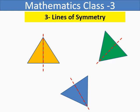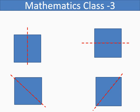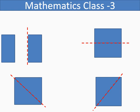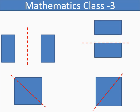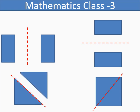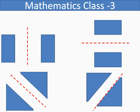Let us take the example of four lines of symmetry — the shape of a square. If you draw a vertical line passing from the middle, you will get two equal halves. Similarly, if you draw a horizontal line passing from the middle, you will get two equal halves. If you draw a diagonal line from the top left corner to the bottom right corner, you will again get two equal halves. Similarly, if you draw a diagonal line from the bottom left corner to the top right corner, you will again get two equal halves. So in the square, we have four lines of symmetry.